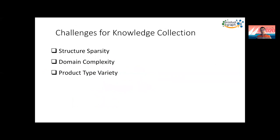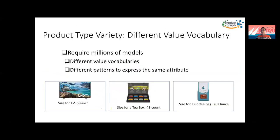And we have the product type variety challenge. What it means is there are different value vocabularies for different product types. Take one example — we're looking at the attribute called size. Size means different things for different product types: for TV it means 58 inch, for T-box the size is 48 count, for a coffee bag it's 20 ounces. That means you cannot build a single model that handles all product types together, because the vocabulary changes as the product type changes. It's very challenging.